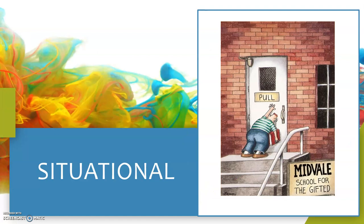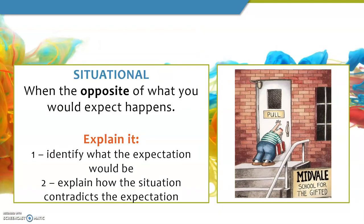The first type of irony we're going to look at is situational irony. We've got a lovely Far Side comic of a young man trying to enter the Midvale School for the Gifted, and he's putting a lot of effort into pushing a door that is clearly labeled 'pull.' Situational irony is when, in the situation, the opposite of what you would expect to happen happens. When explaining irony, identify what the expectation would be and then explain how the current situation contradicts that expectation.